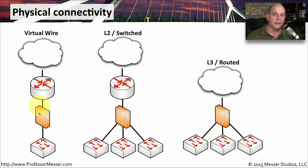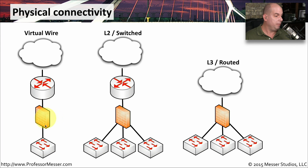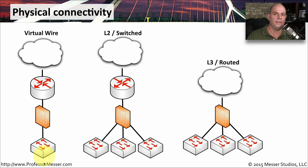One way to connect the firewall is through something called virtual wire. In this mode, the firewall doesn't act as a layer 2 device or a layer 3 device — it's effectively a repeater. It takes everything coming in one port and sends it to the other, and everything from the other port it sends back to the inside. That is as much forwarding as it knows how to do. This is a way you can connect to the network without changing any of your IP configurations or network infrastructure, because you're effectively just a bump on the wire.